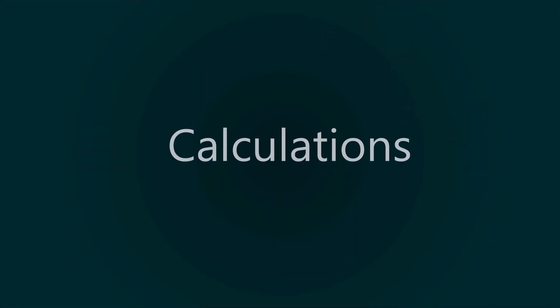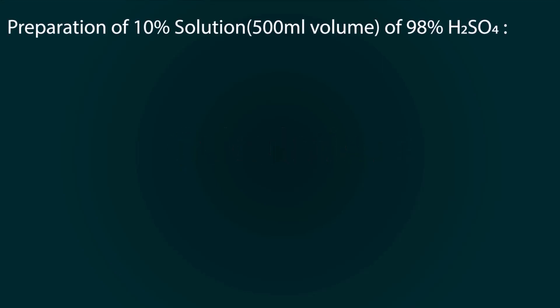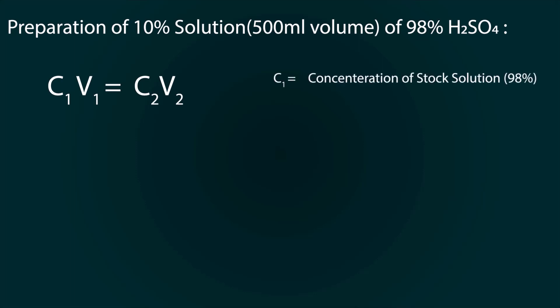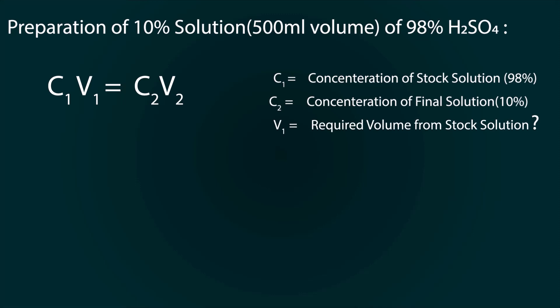We need some calculations before preparation of the solution. Preparation of 10% Sulfuric Acid solution from 98% H2SO4. The formula of concentration is C1V1 = C2V2. C1 is the concentration of the stock solution, which is 98%. C2 is the concentration of the final solution, which is 10%. V1 is the required volume from the stock solution. V2 is the final solution volume, which is 500 ml.